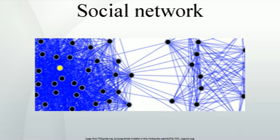Complex networks: Most larger social networks display features of social complexity, which involve substantial non-trivial features of network topology, with patterns of complex connections between elements that are neither purely regular nor purely random (see complexity science, dynamics, dynamical system and chaos theory), as do biological and technological networks.